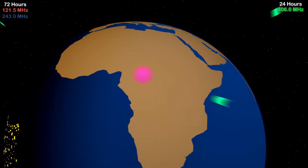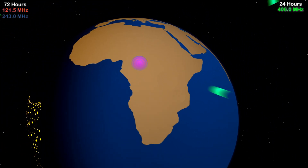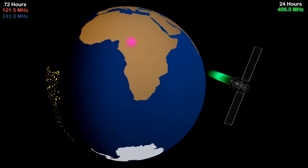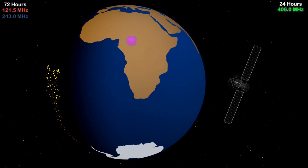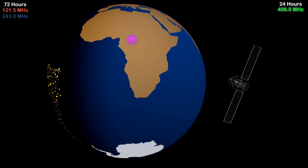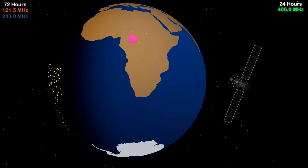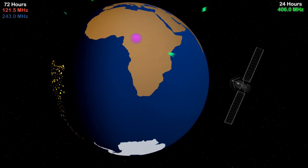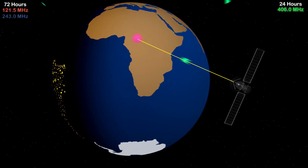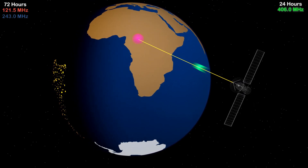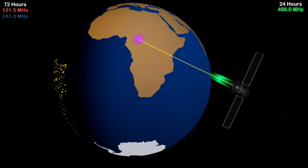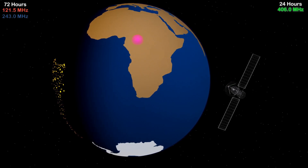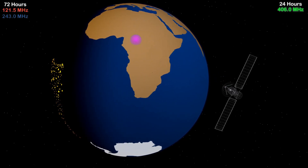The 406 MHz signal gets picked up by satellites orbiting the Earth. The beacon signal provides information about the aircraft in distress to the satellite, which helps track the location and significantly reduces the search site to a one nautical mile radius area.